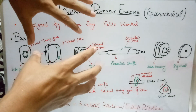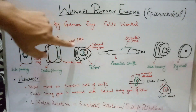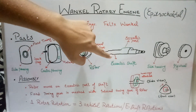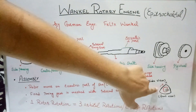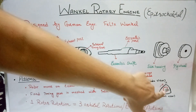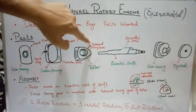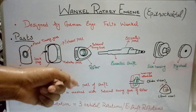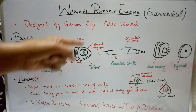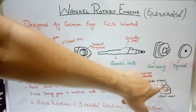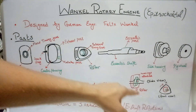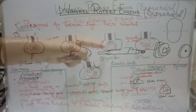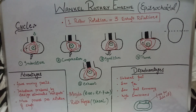This meshing ensures that one complete rotation of the rotor is equal to three rotations of the eccentric shaft. The internal timing gear (shown in red) is larger than the fixed timing gear (shown in green). One complete rotation of the rotor equals three rotations of the eccentric shaft.